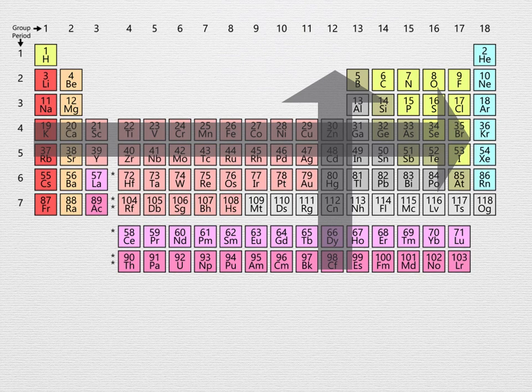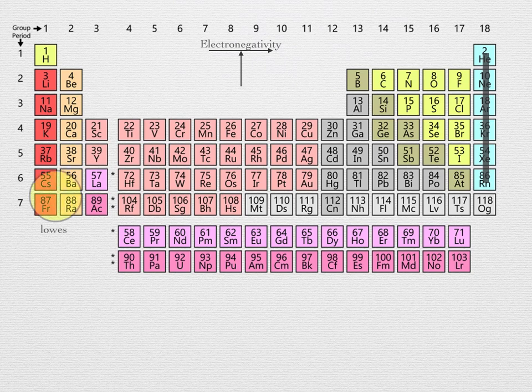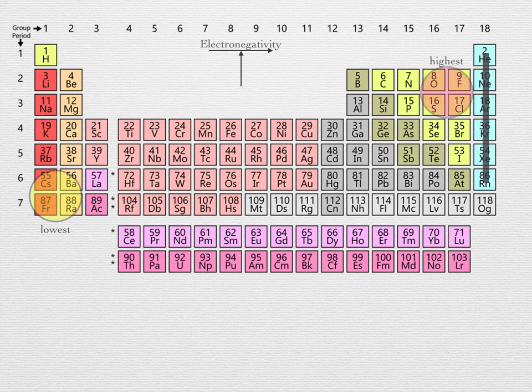The noble gases do not follow this trend. The upper atoms, helium and neon, are hardly electronegative at all. But the general trend is that the lowest electronegativity is at the bottom of the alkali metals around cesium, and it is highest at the top of the halogens around fluorine. Oxygen, which is right next to fluorine, has the second largest electronegativity after fluorine.